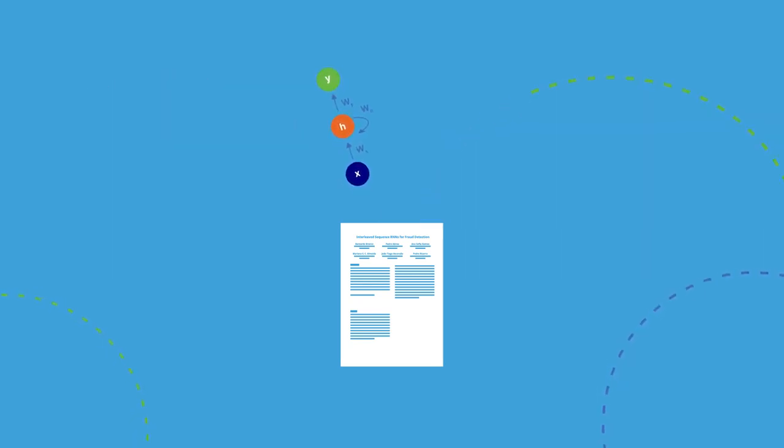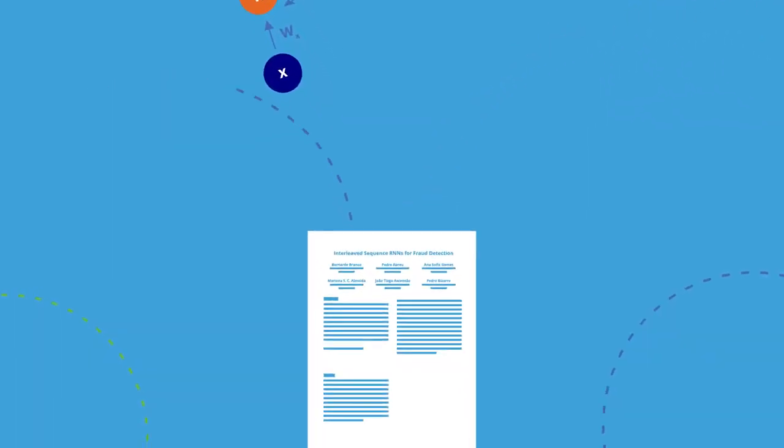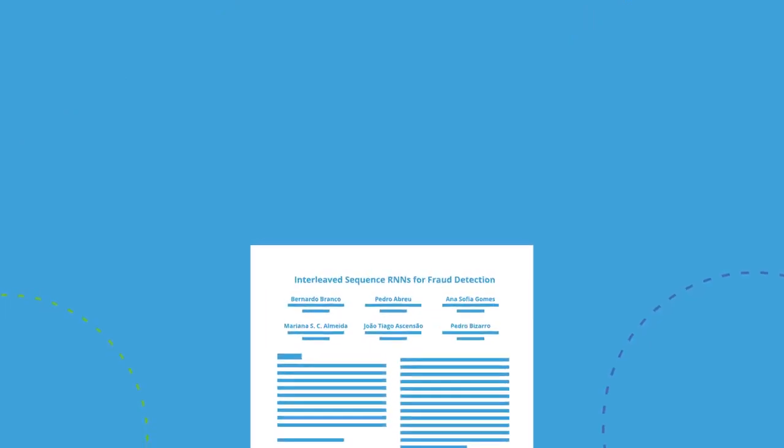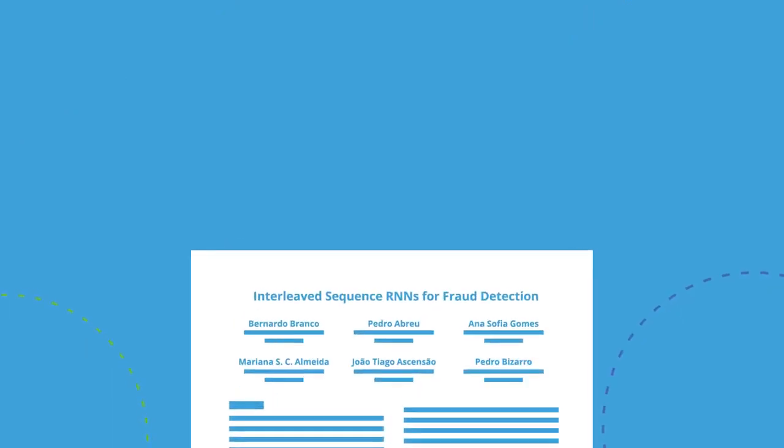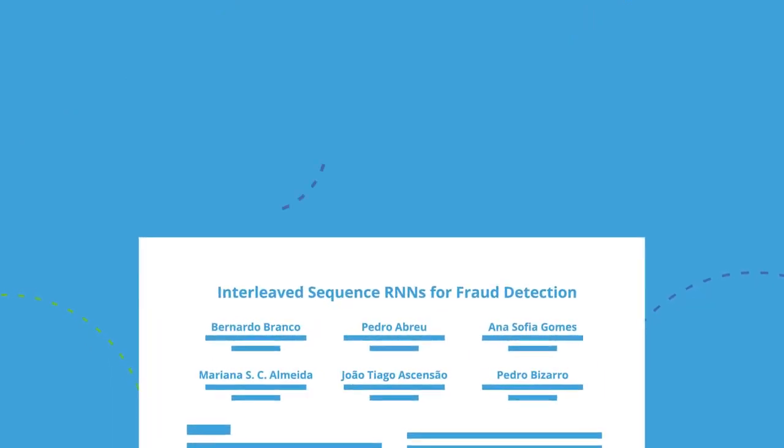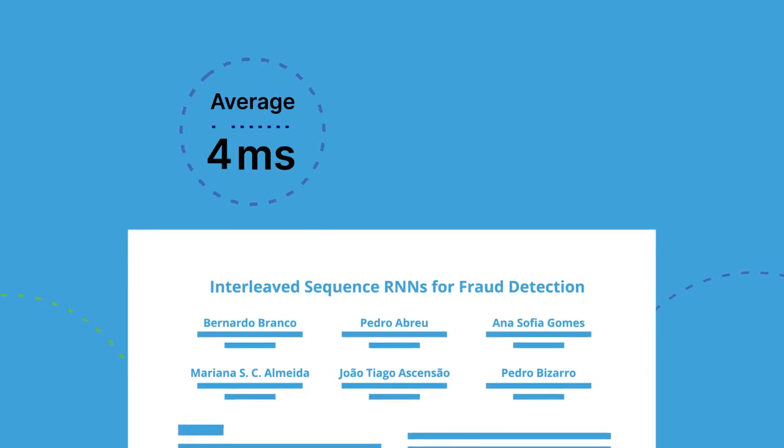Check out our paper to understand better how we deal with these interleaved sequences. In the paper, we also share many useful tips on how to train and deploy RNNs efficiently for a demanding production environment, where we take on average just 4 milliseconds to score each transaction, and less than 11 milliseconds to score 99% of the transactions. For more information, visit our website.